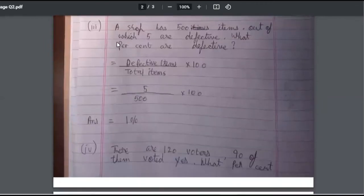Now third question. Again, your statements are missing, so I'm not going to discuss that thing. In the first two questions we have already discussed. The question is: a shop has 500 items, out of which 5 are defective. What is the percentage of defective?